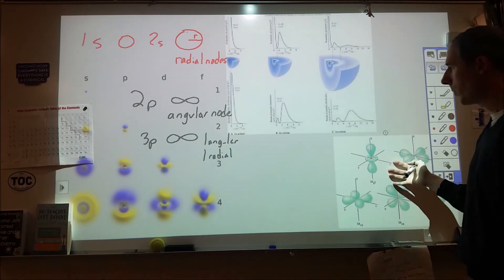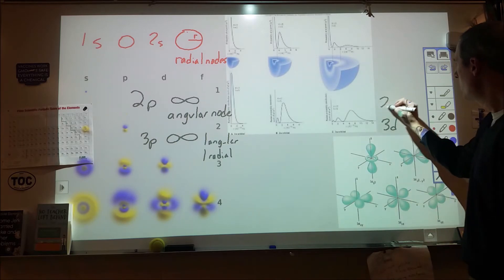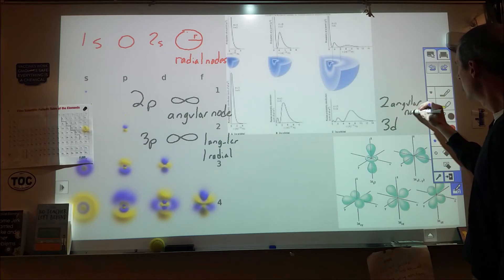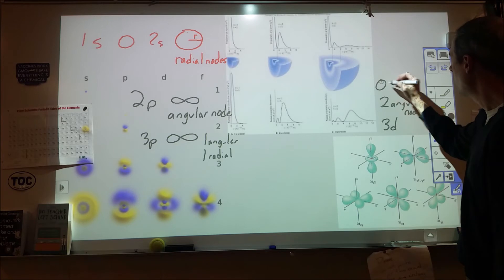So you're probably picking up on some trends here. It seems as we go from s to p to d, that we're increasing in angular nodes. And as we go from energy level up, we're getting more and more radial nodes. So when we come over to the 3d, what do we have going on?